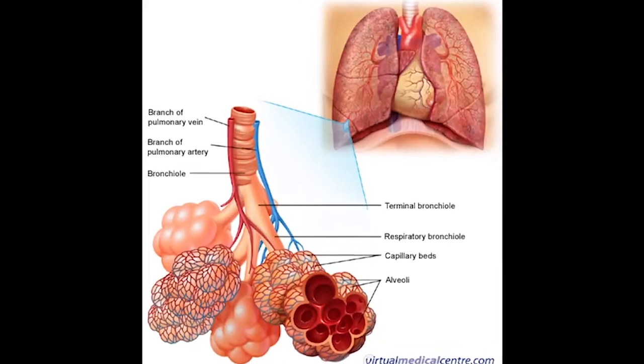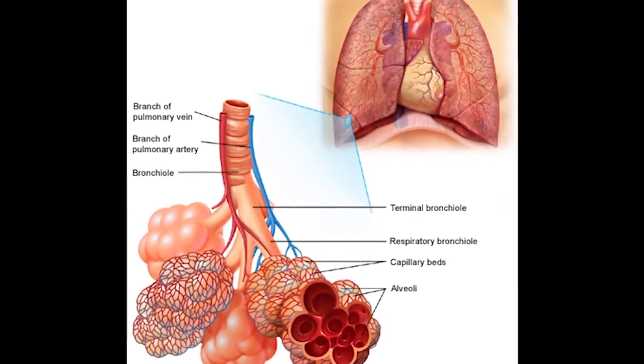Premature babies often struggle to keep their lungs open and breathe. The functional unit of the lungs, the alveoli, are like small balloons which are hard to inflate the first time.